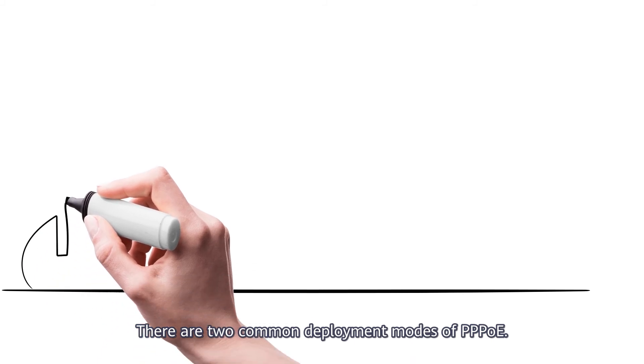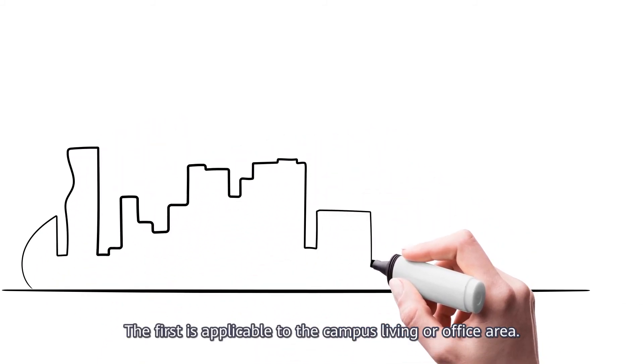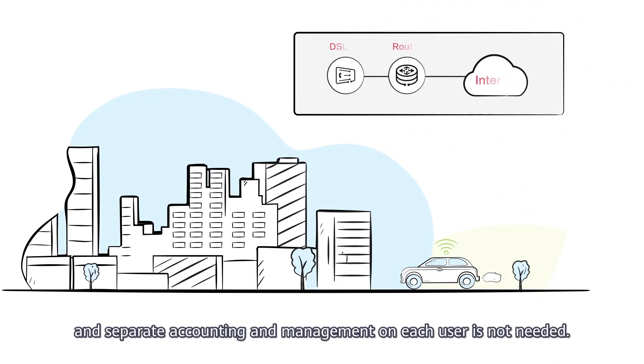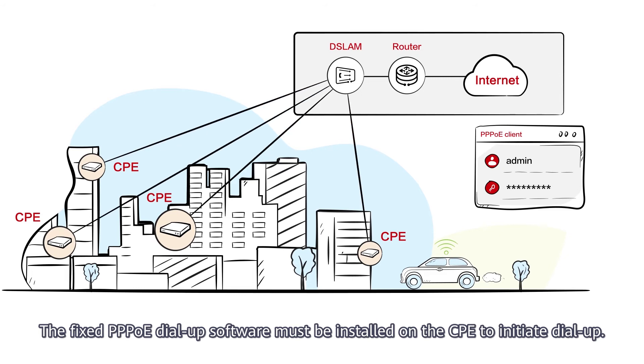There are two common deployment modes of PPPoE. The first is applicable to the campus, living or office area. All users share one account, and separate accounting and management on each user is not needed. The fixed PPPoE dial-up software must be installed on the CPE to initiate dial-up.